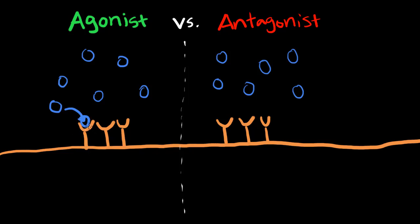What an agonist is going to do is essentially act like the same thing. So let's say we have a medication that is an agonist, a dopamine agonist. Then what it's going to do is also bind to these receptors and then activate it.